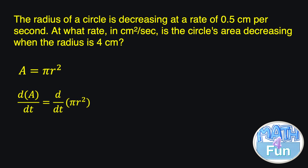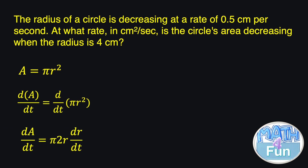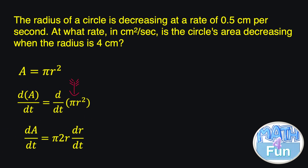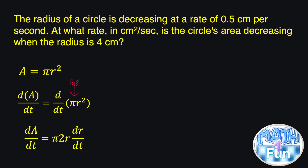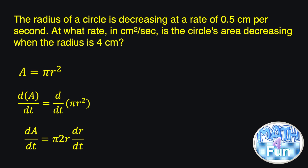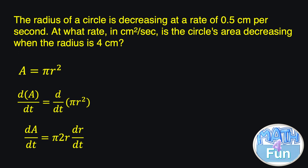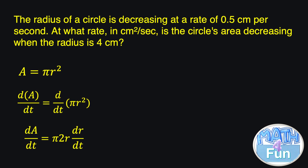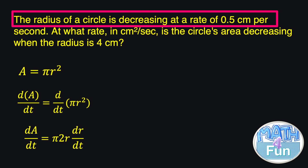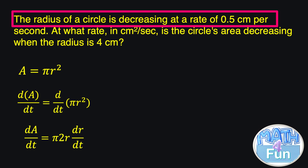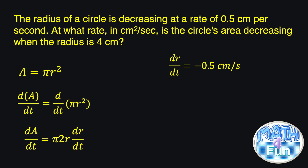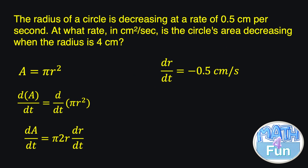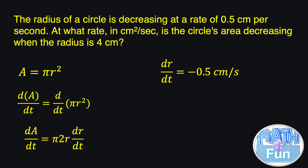So dA/dt equals π times 2r times dr/dt, since π is a constant. Now looking at the given: the radius of the circle is decreasing at a rate of 0.5 cm per second, which means dr/dt is given as minus 0.5 cm per second.